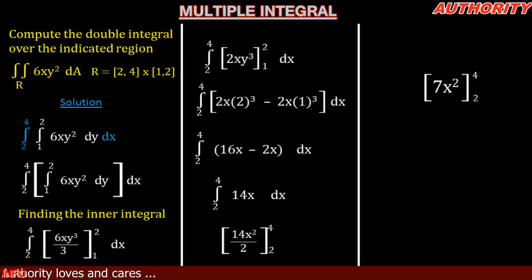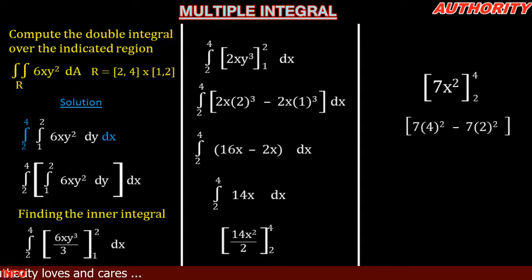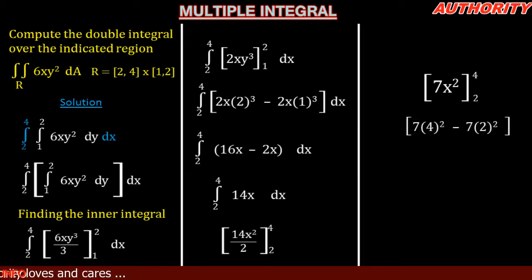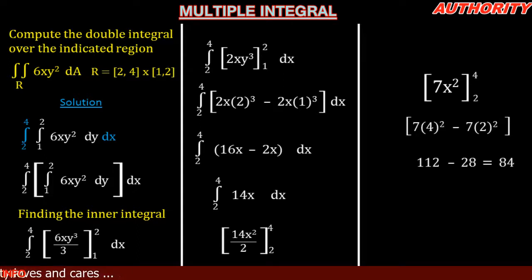Plugging in the boundaries: 7(4²) minus 7(2²). 4² is 16, and 16 times 7 is 112. 2² is 4, and 4 times 7 is 28. So 112 minus 28 equals 84.